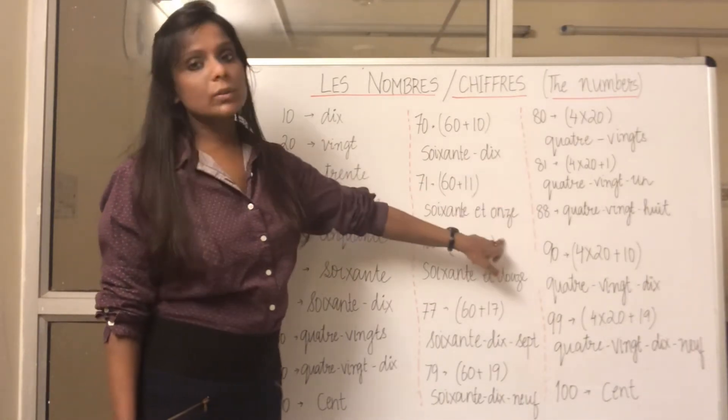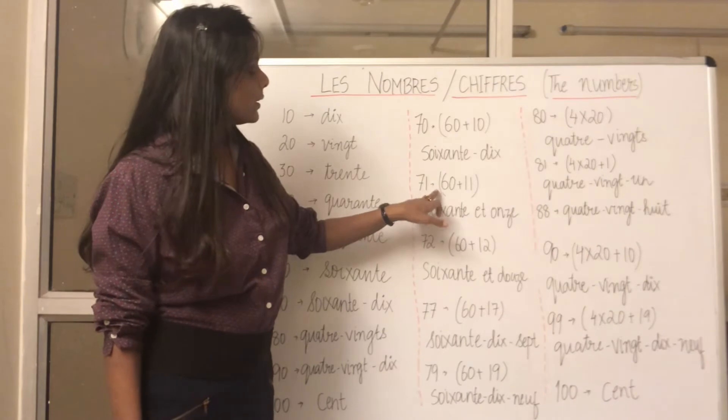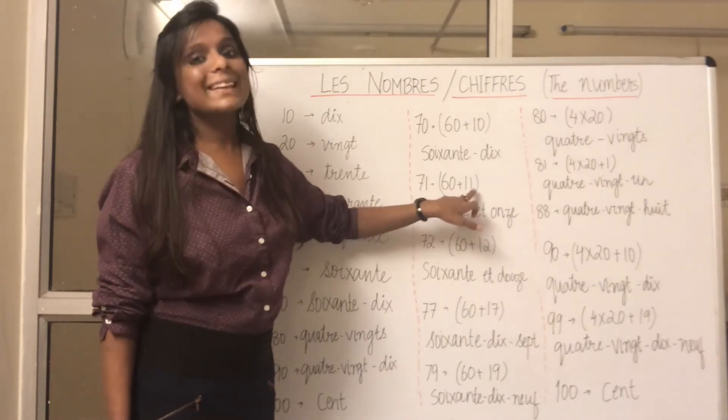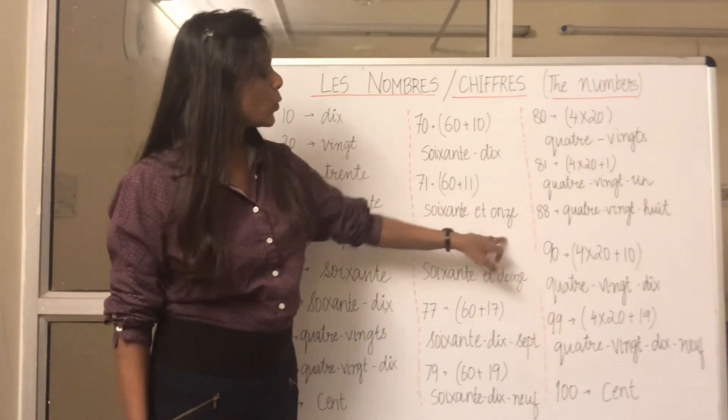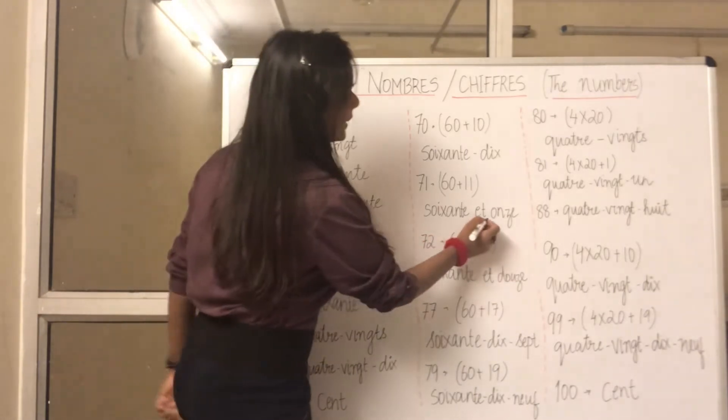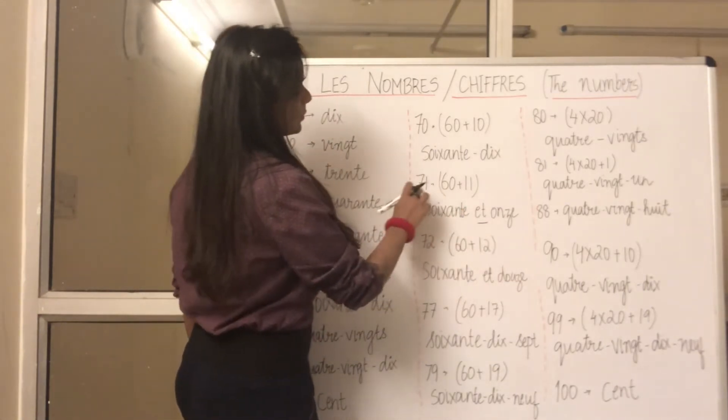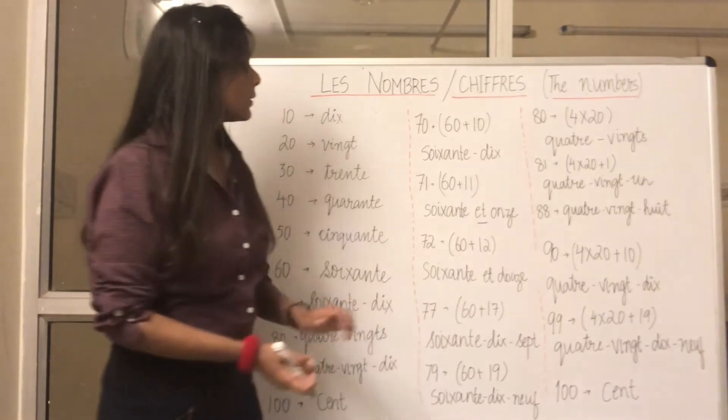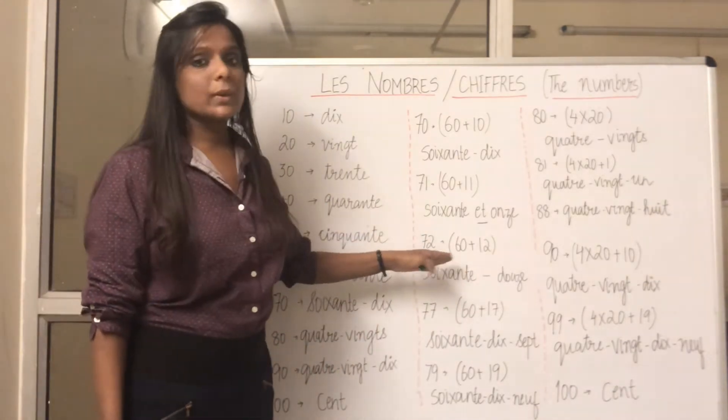So 71 is 60 plus 11, so soixante et onze. Here we add 'et' in 71, so soixante et onze.